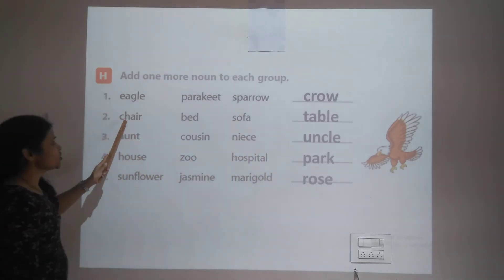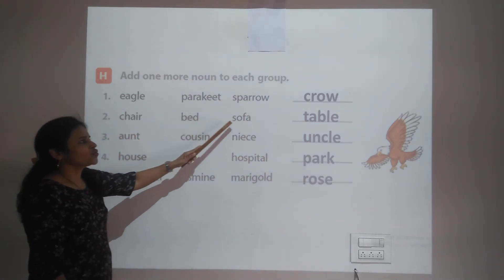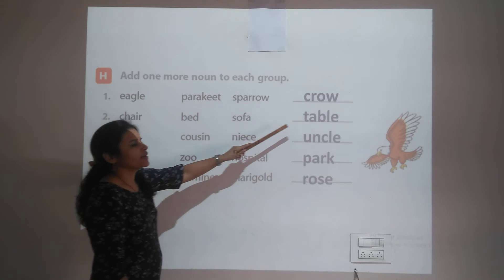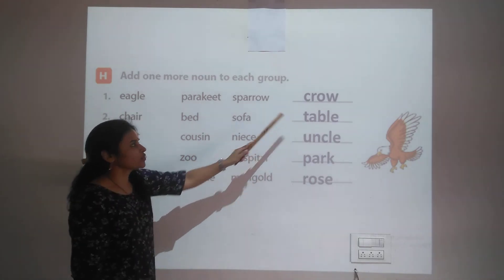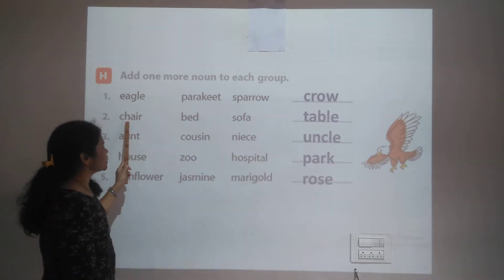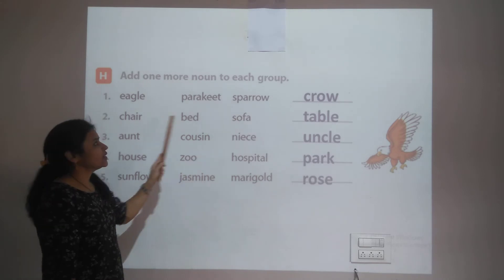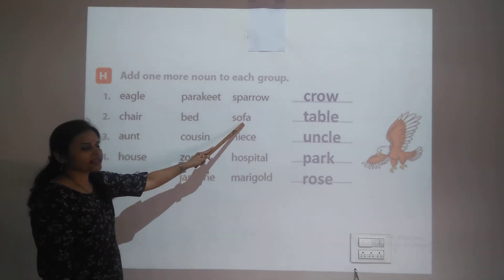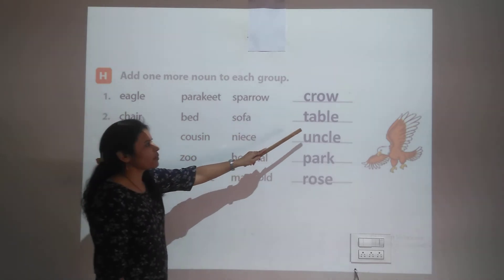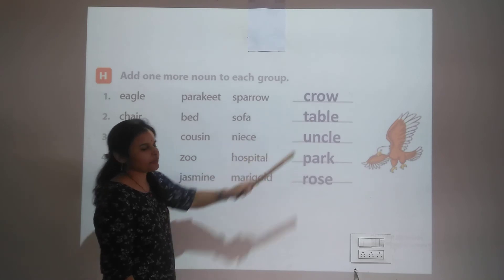The second group is furniture: chair, bed, sofa. We add 'table' to this group. So the group becomes: chair, bed, sofa, and table.